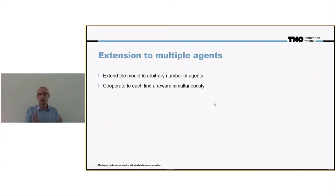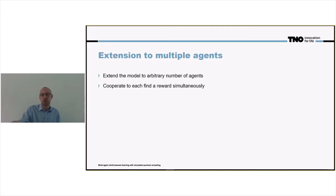If we have this model, then we can extend it to a different number of agents. The model we have just seen is a model to be used for a single agent, and a single agent has to obtain a single reward.